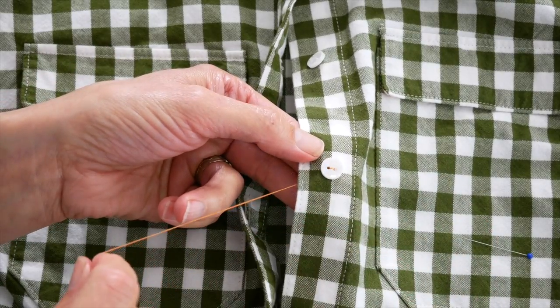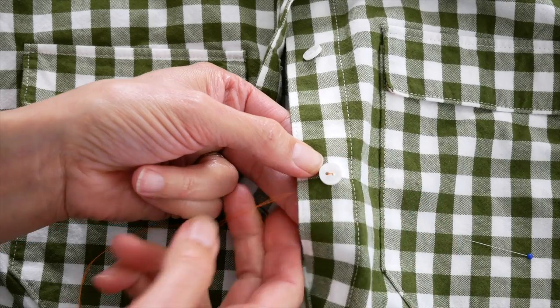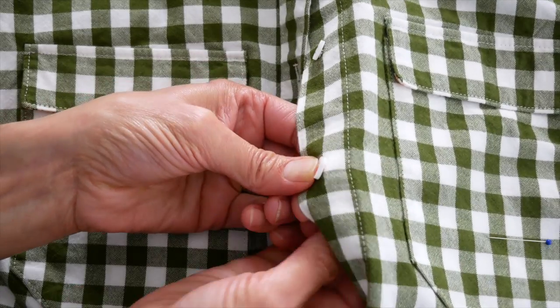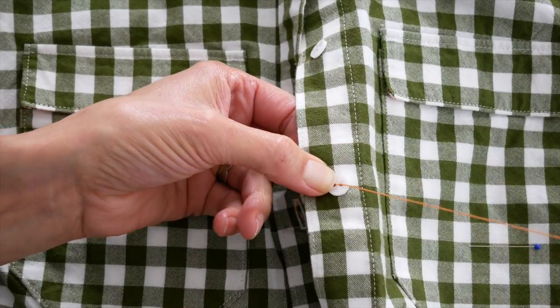So don't sew on your buttons too tightly. Don't sew them on crazy loose either. You want to aim for the thickness of the buttonhole. So just keep it a little loose.